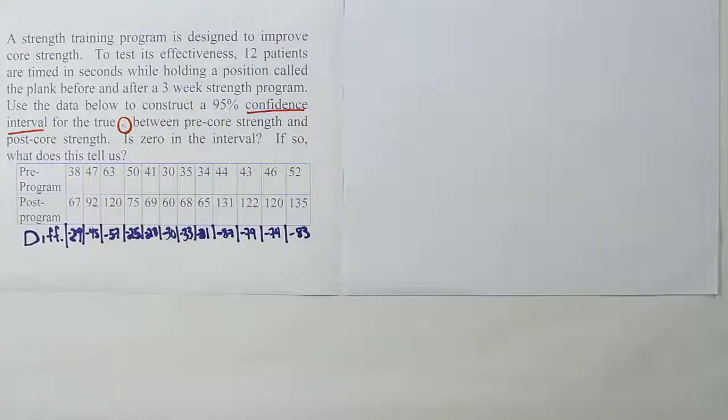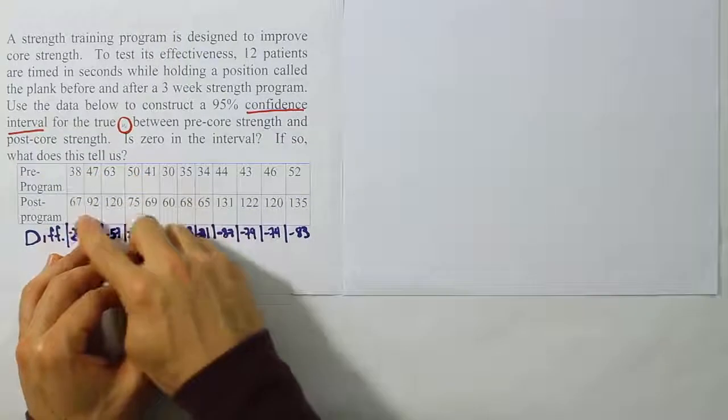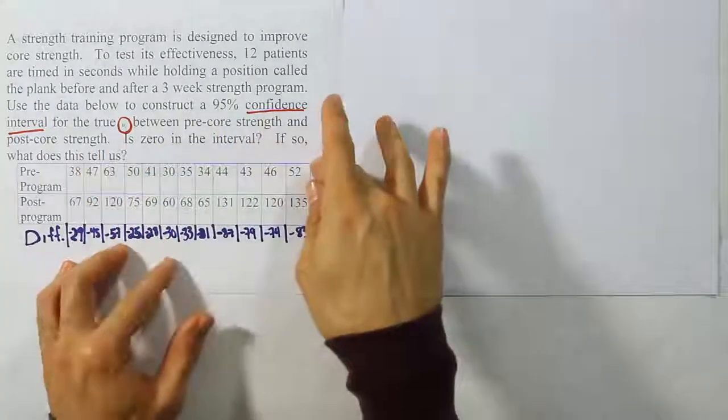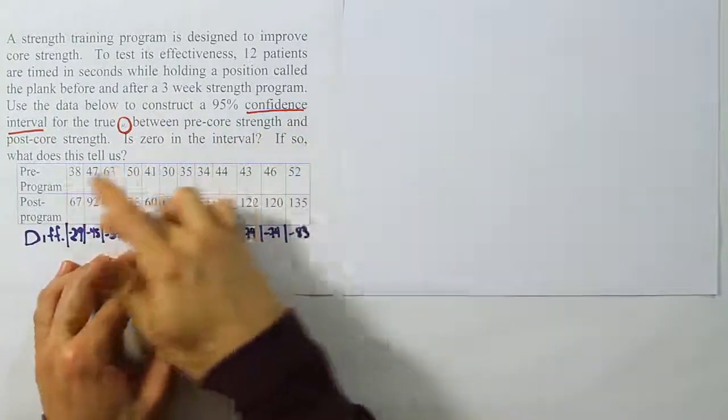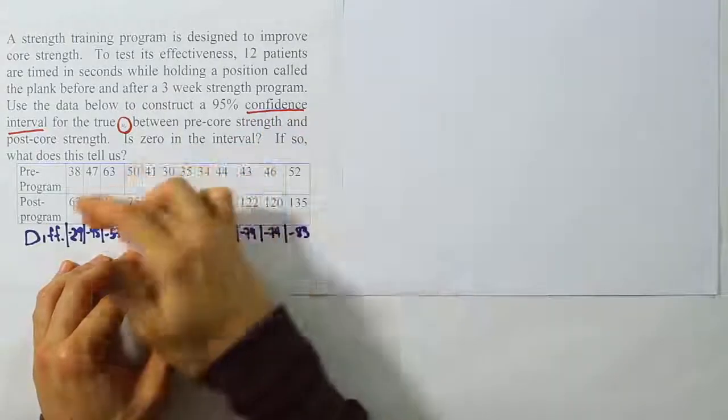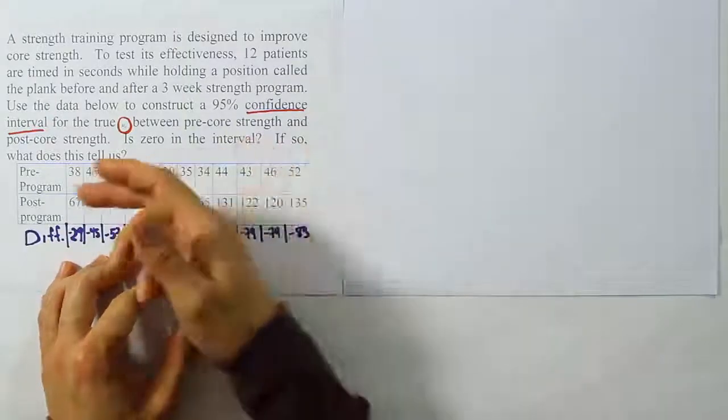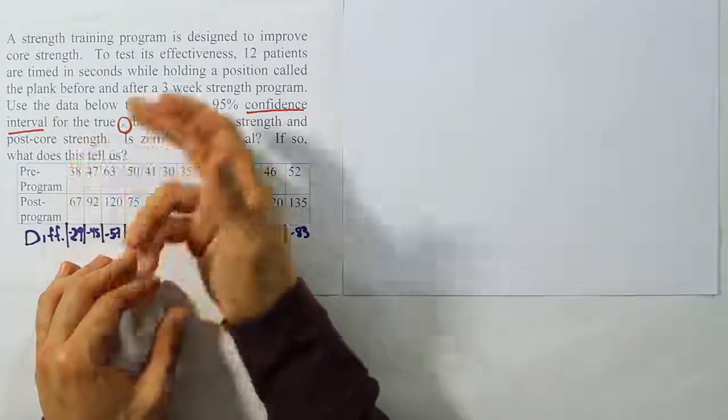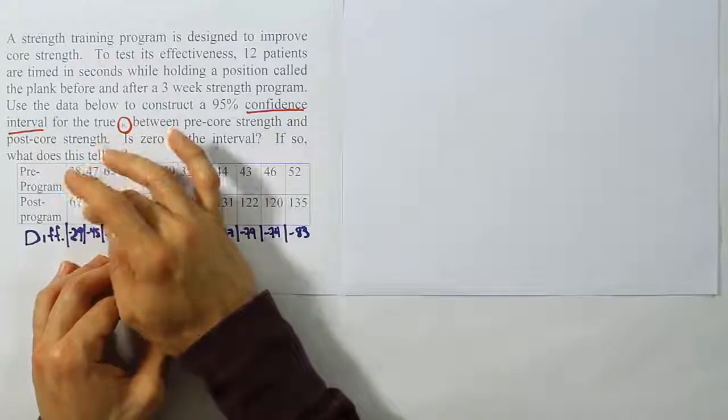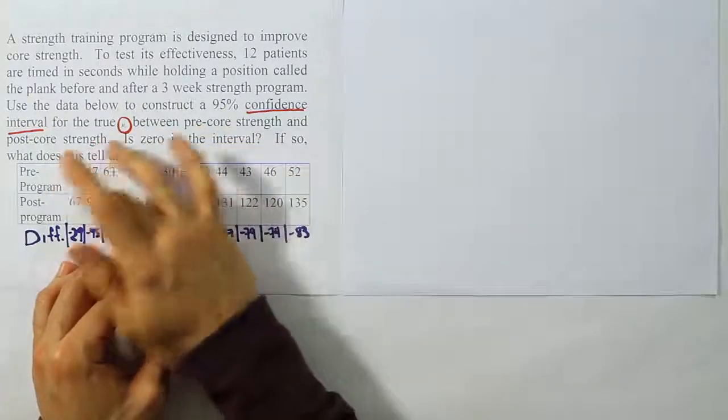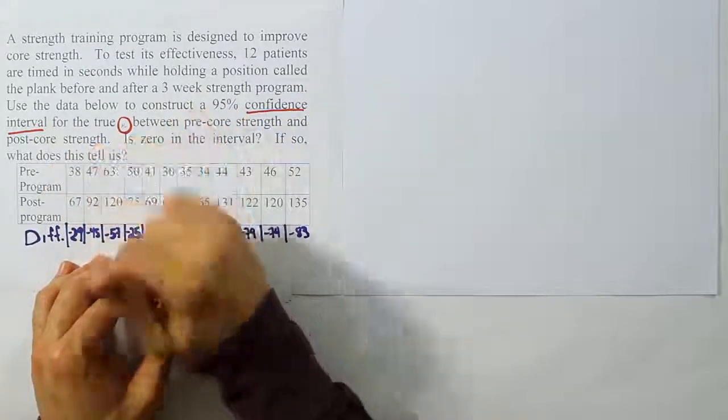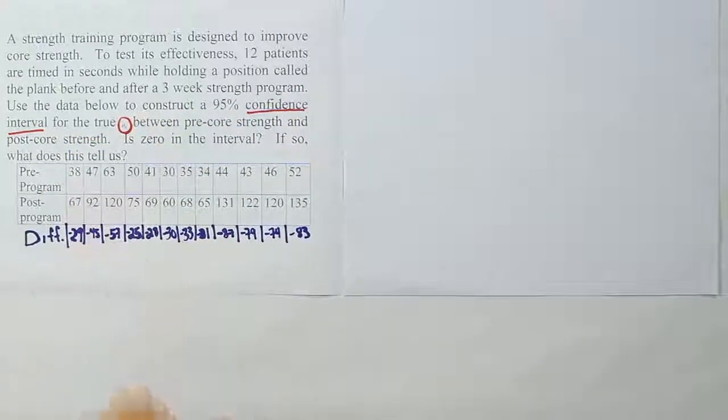So it's implied by the notation that this is a dependent t-test. And of course, when we look at the layout of the data, it's also a clue that it's a dependent t-test because we have pre-program, post-program. They test them in the plank before, and then after doing the three-week strength program, they give them another test to see how long they can hold the plank. So clearly these are dependent data points because they're linked by the subjects who are taking the tests.